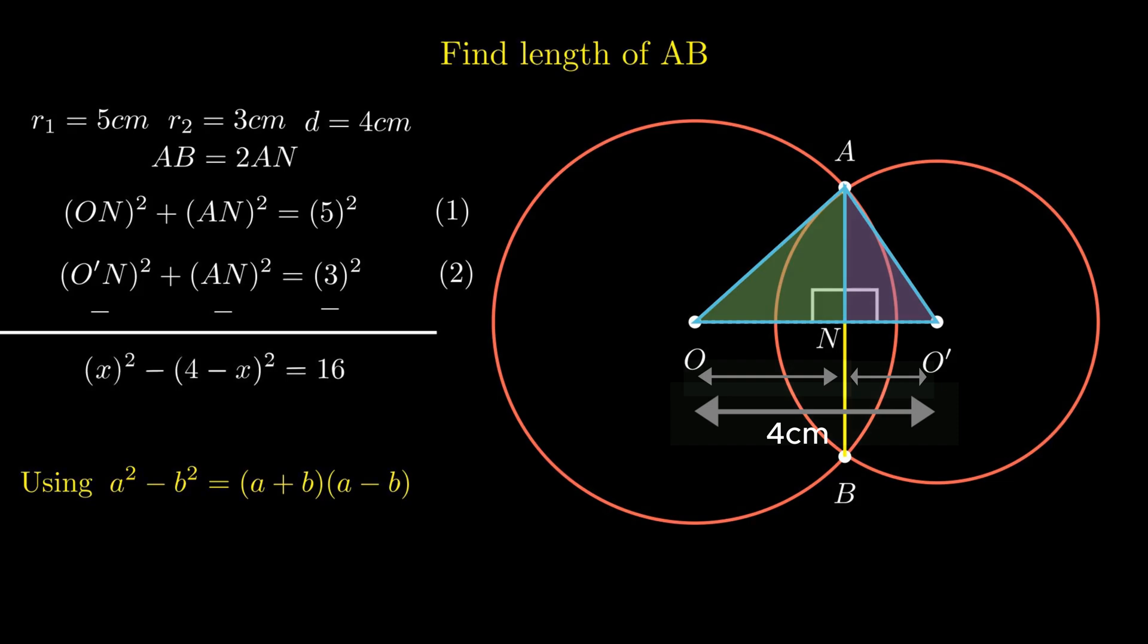On simplification using identity A square minus B square equal to A plus B into A minus B, we get X plus 4 minus X into X minus 4 plus X equals 16, which on further simplification gives us 2X minus 4 equal 4. Therefore, X equal to 4.